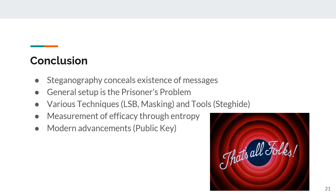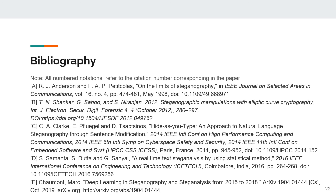To summarize this presentation: we've covered how steganography conceals the existence of messages; its theoretical basis described in the prisoner's problem with Alice and Bob communicating against a warden; various techniques such as LSB for images or masking for audio; and tools such as steghide that are modern implementations of these techniques. The core of the paper measures the various limits of steganography using entropy and information theory, and we concluded with related and future works currently in this field. Here is a list of sources used for this presentation — numbered annotations in the slides correlate to citations listed in the paper itself, while lettered sources are references used specifically for this presentation. If you have any further questions, feel free to email me or leave a comment below. Thank you!